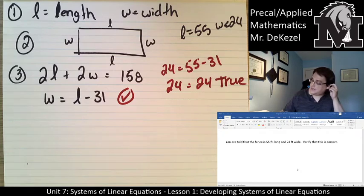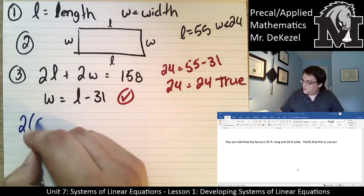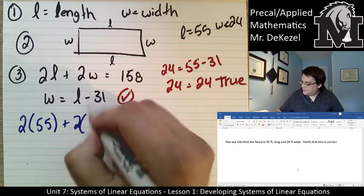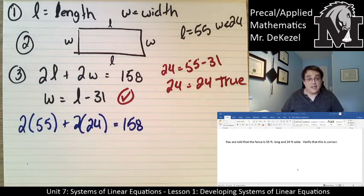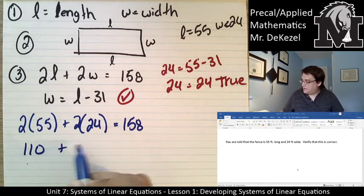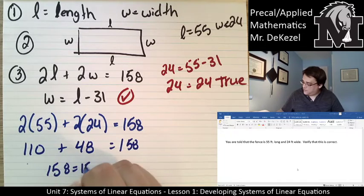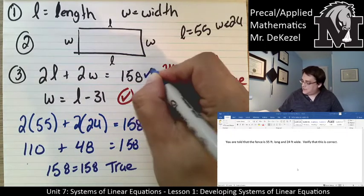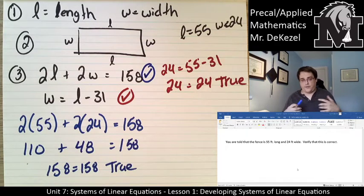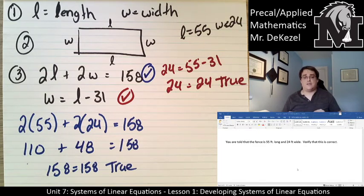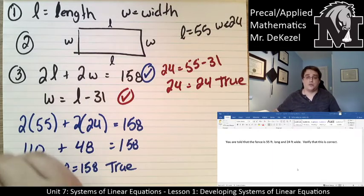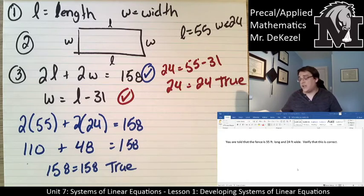Now the other equation: 2 times 55 plus 2 times 24 must equal 158. That gives us 110 plus 48, which equals 158. So 158 equals 158 — this is true. We have verified that the fence is 55 feet long and 24 feet wide. If some of these didn't work out, we would see that the proposed solution is not correct — there might be no solution, or just a wrong one given.